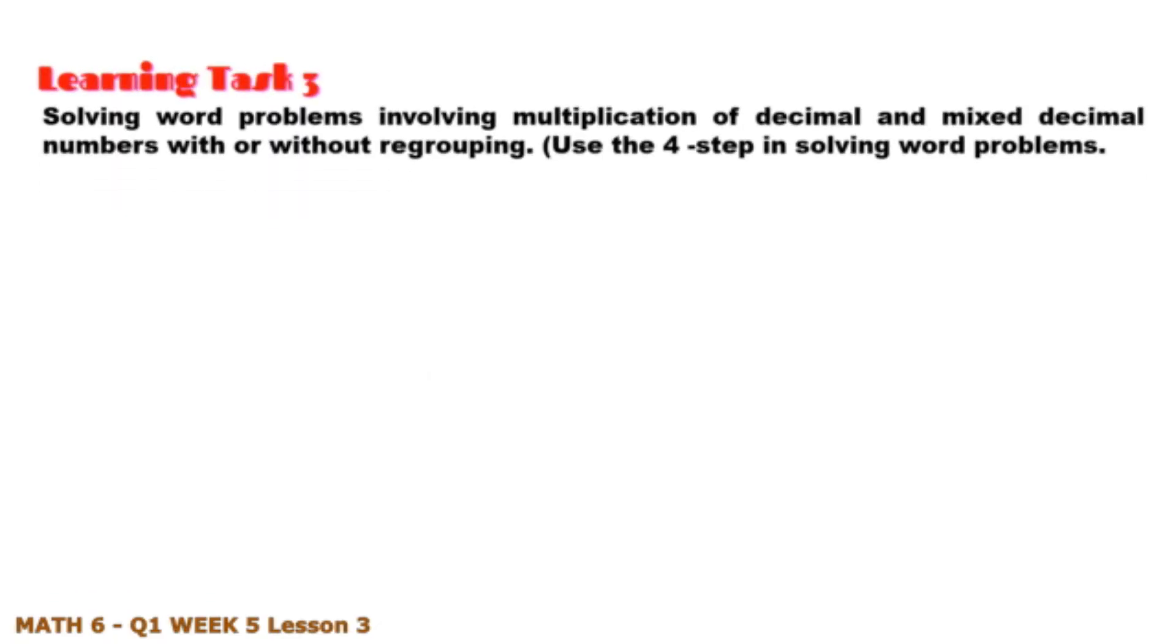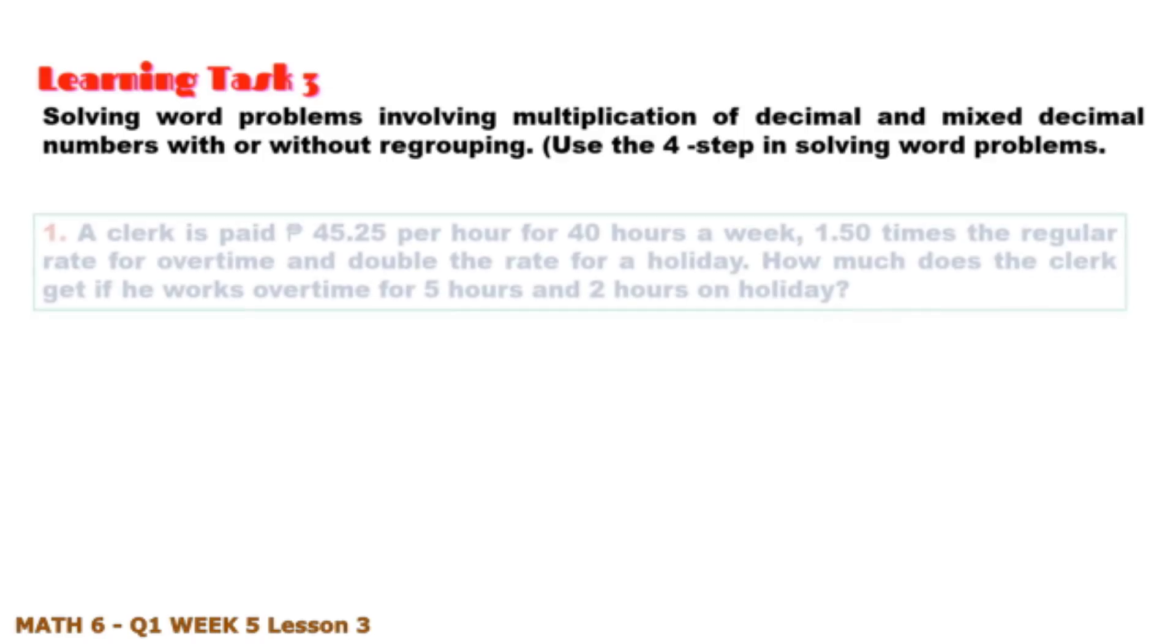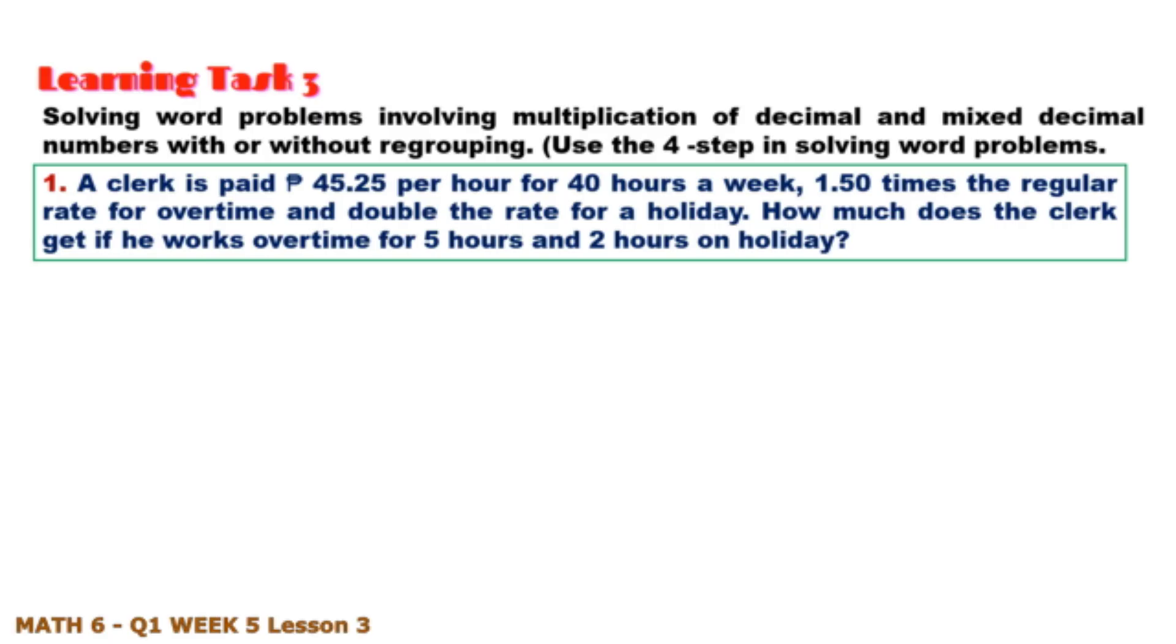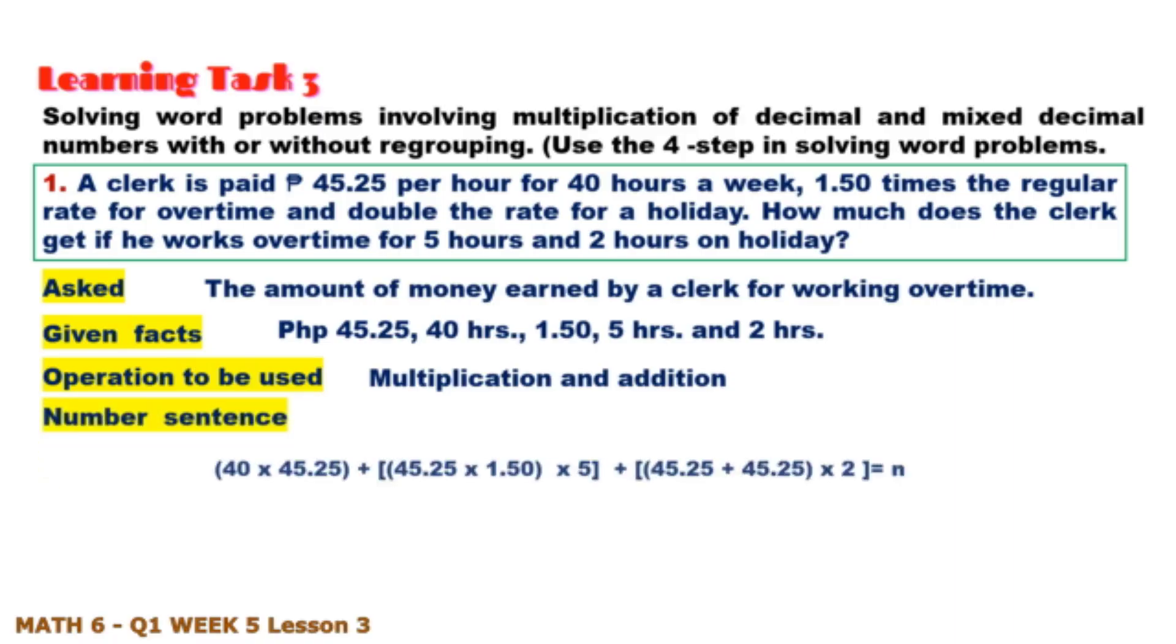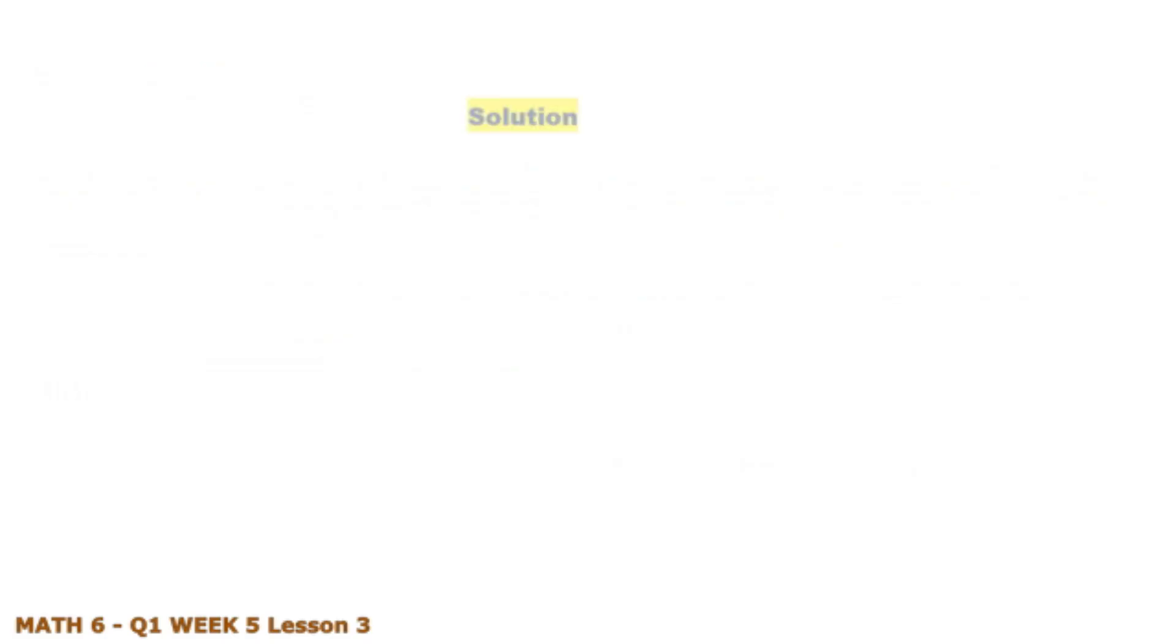Learning task three: Solving word problems involving multiplication of decimal and mixed decimal numbers. Number one: A clerk is paid 45.25 pesos per hour for 40 hours a week, 1.50 times the regular rate for overtime, and double the rate for a holiday. How much does the clerk get if he works overtime for 5 hours and 2 hours on holiday? What is asked? Given facts? Operation to be used? Number sentence? For solution.